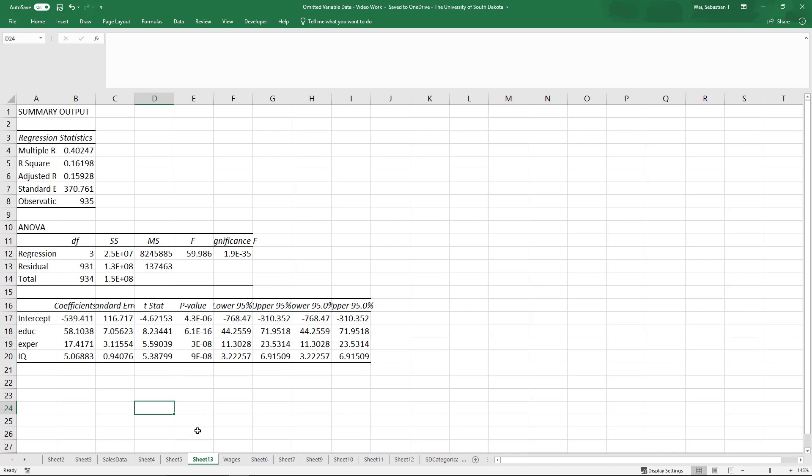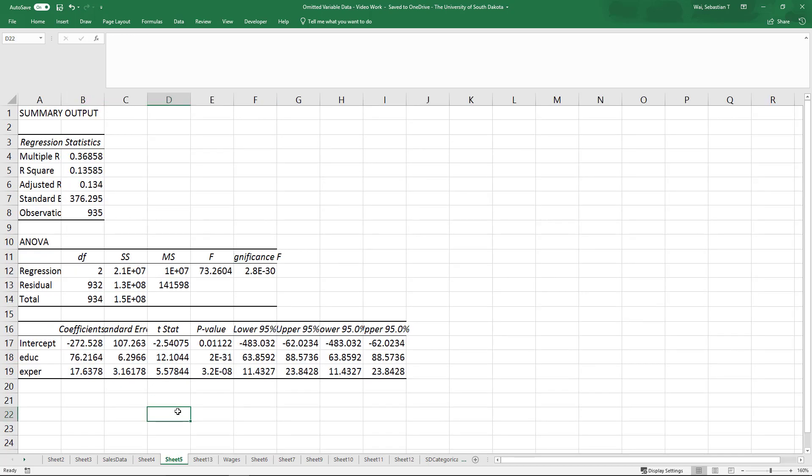Looking at the experience coefficient, we now have about 17.4. Compared to before, we had about 17.6. So almost no change there. What this suggests is that IQ and experience are pretty much uncorrelated.